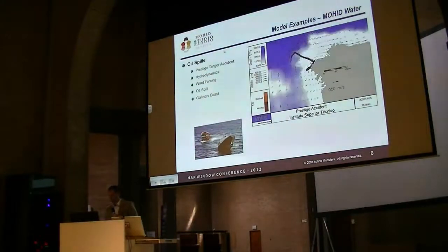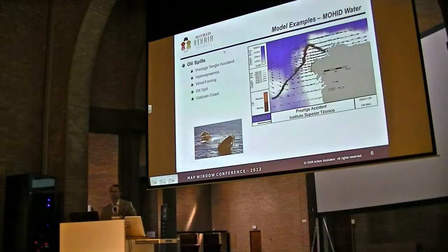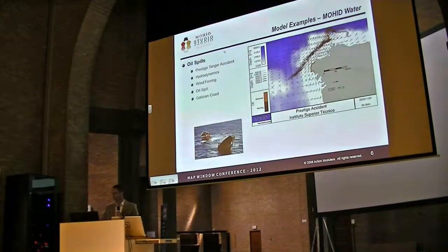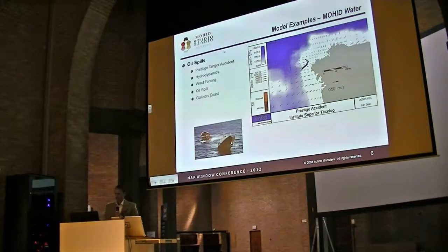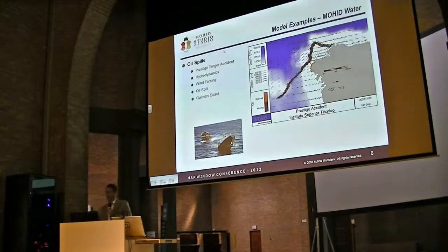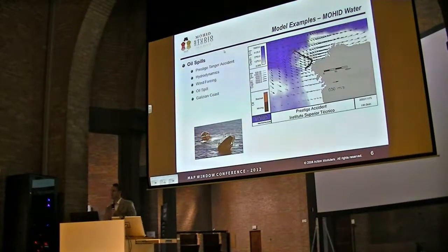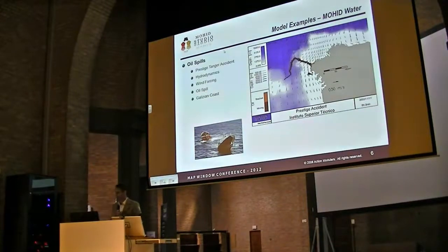Here's another example of where the model can be used. This is the result of a city's tanker accident which occurred in 2002 on the north of the Iberian coast. As you can see in this animation, we have to represent wind velocity, we have oceanographic data, and we also have the oil spill in the form of a Lagrangian tracer model, which consists of a lot of small particles.